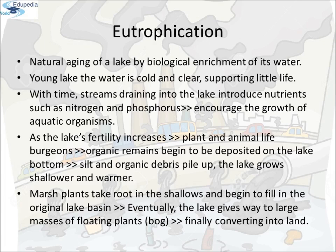Eutrophication: It is the natural aging of a lake by biological enrichment of its water. In a young lake, the water is cold and clear, supporting little life. With time, streams draining into the lake introduce nutrients such as nitrogen and phosphorus, which encourage the growth of aquatic organisms. As the lake's fertility increases, plant and animal life burgeons and organic remains begin to be deposited on the lake bottom. Over the centuries, silts and organic debris pile up; the lake grows shallower and warmer, with warm-water organisms replacing those that thrive in cold environments. Marsh plants take root in the shallows and begin to fill in the lake. Eventually, the lake gives way to large masses of floating plants. Finally, it is converted into land. This process is called eutrophication.